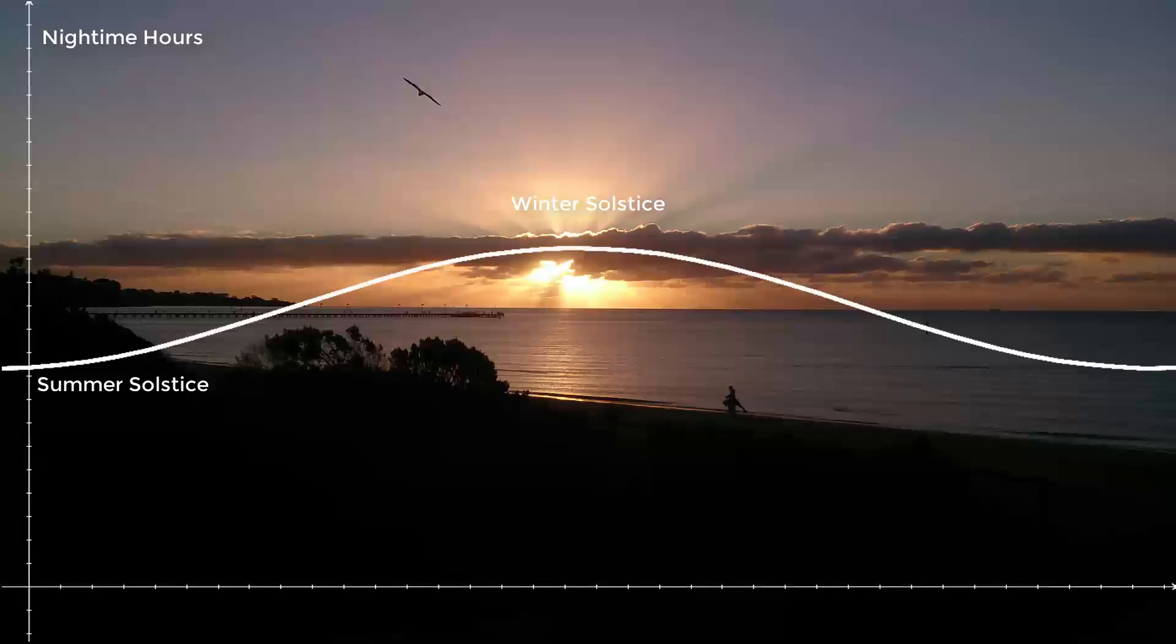Therefore, the graph of night time hours will be an increasing function from December to June and decreasing for the other 6 months.